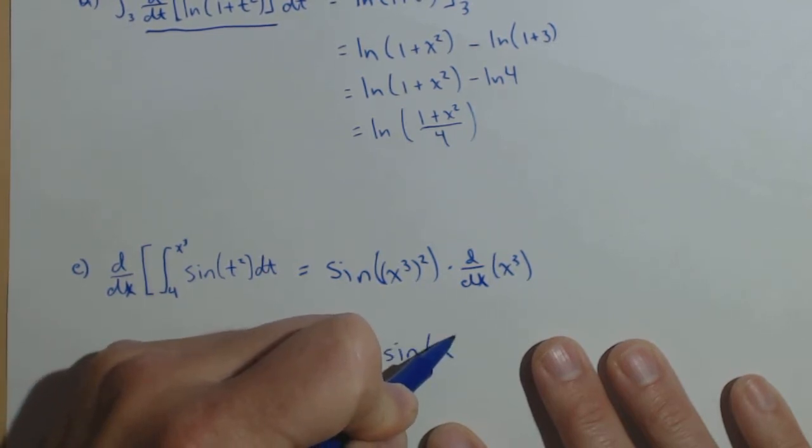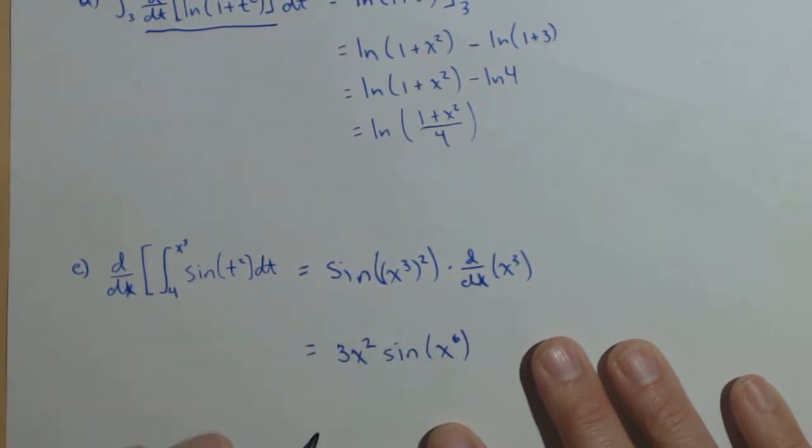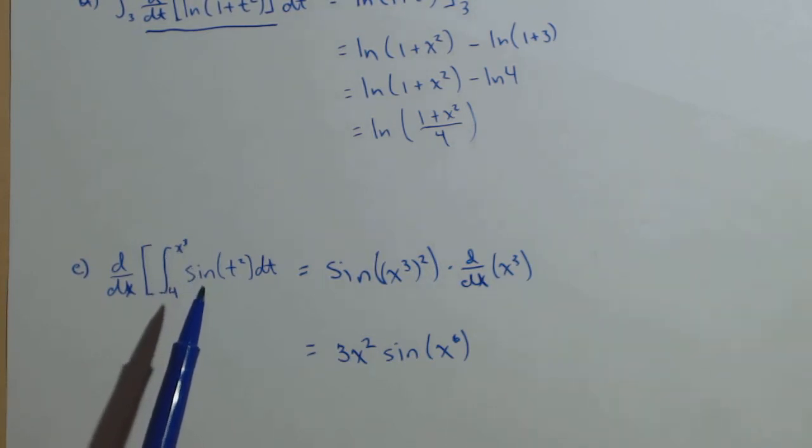sin of x cubed, excuse me, x to the sixth for our final answer. So, if one of your limits is more than just x, realize that's gonna be a situation where you have a chain rule, because basically that's like a composition of functions.